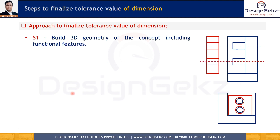The first step is preparation of 3D CAD geometry for the design concept, where we model out important functional features like locators, bosses, holes, ribs, interfacing surfaces, snap feeds, dog house, slots, etc.